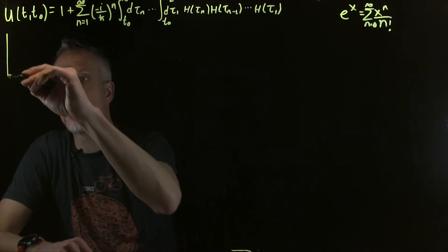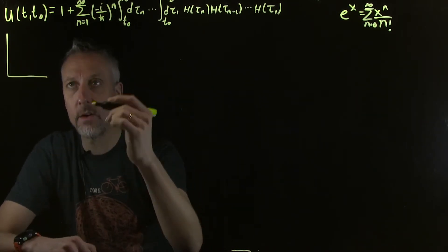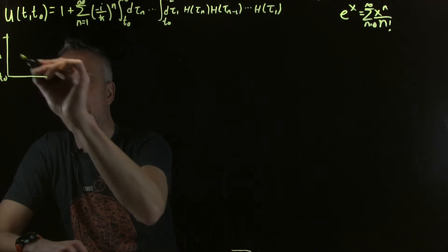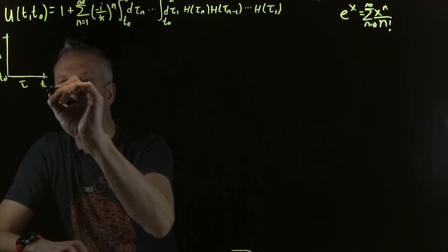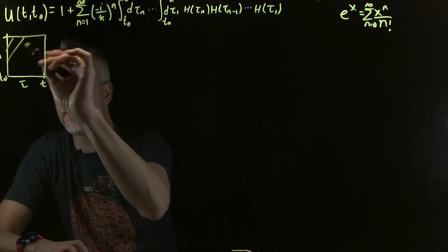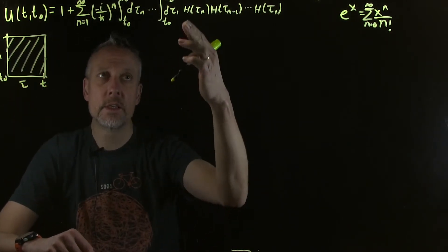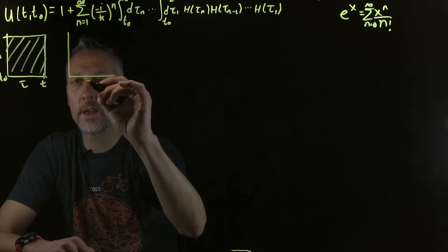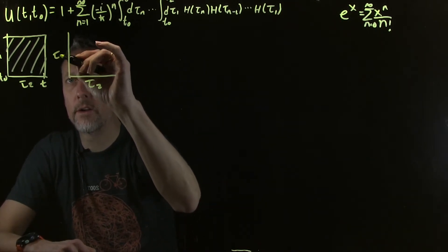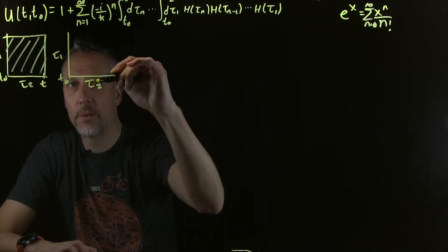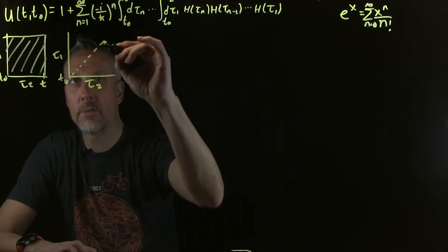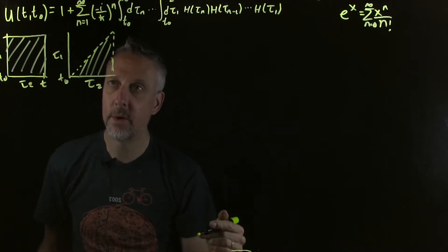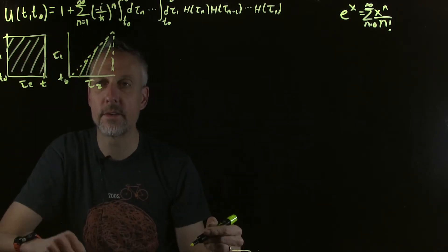An analogy: if we're integrating over this region, we might think that if I'm integrating τ₁ from zero to t, and τ₂ from t₀ up to t, then I'd be integrating the function over the whole region. Instead, what we're doing is integrating from τ₁ up to τ₂ — a smaller region. We're integrating τ₁ from t₀ up to whatever τ₂ happens to be, which corresponds to this region here — obviously half of that one. But we don't know what the function is doing in the other area.